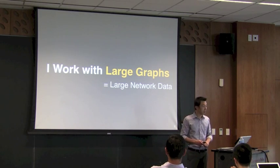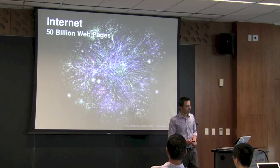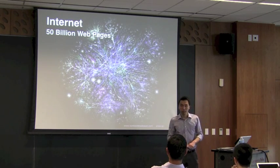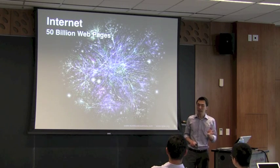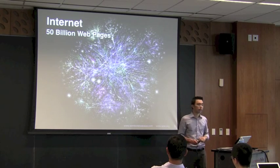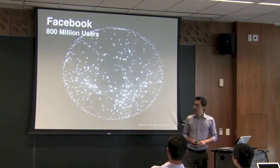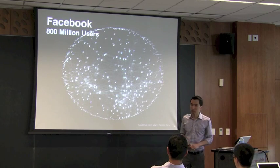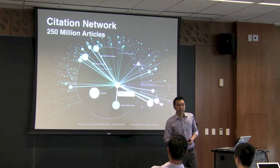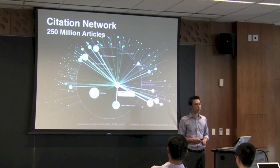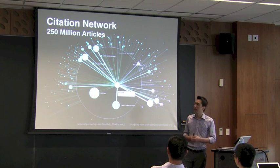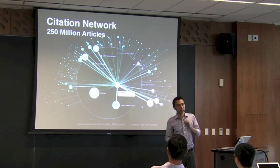I'll give some examples of what I mean by that. The internet is one giant graph of 50 billion web pages, where each node in the graph is a web page, and a link means one web page linking to another. Facebook is another example with over 800 million users. In academia, you can build a citation network out of papers, where each node is a paper and an edge means one paper citing the other.